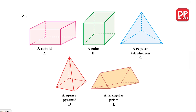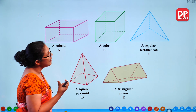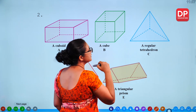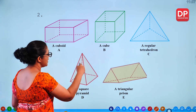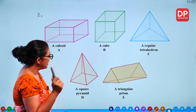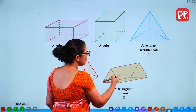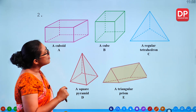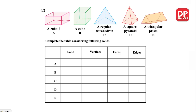Now we'll look at these shapes. First is a cuboid, like a brick. Second is a cube, like a die. Then a regular tetrahedron — where all sides are triangles — and a square pyramid, which has a square base with all other sides as triangles. Finally, a triangular prism has 2 triangles and 3 rectangles. These are all solids. Regular means all sides are equal. Now we'll identify vertices, faces and edges for each.